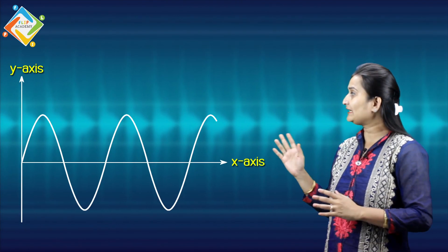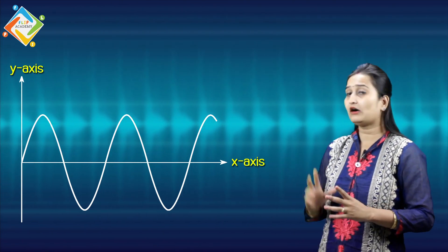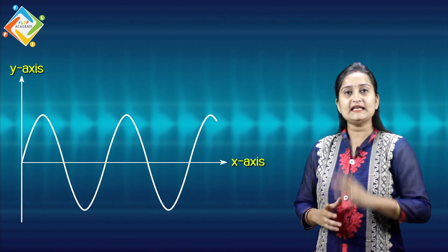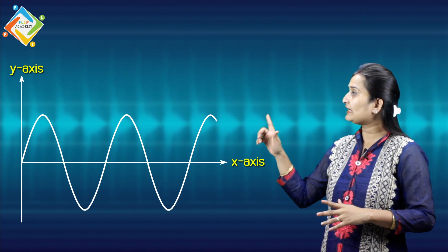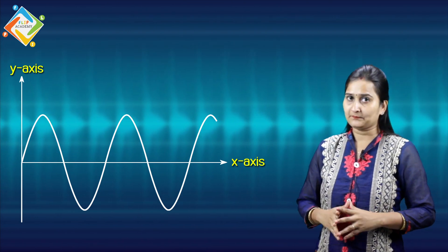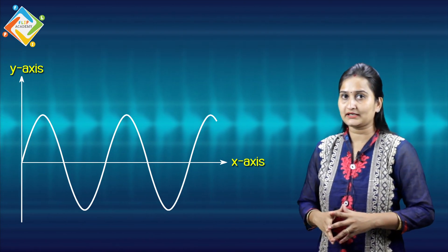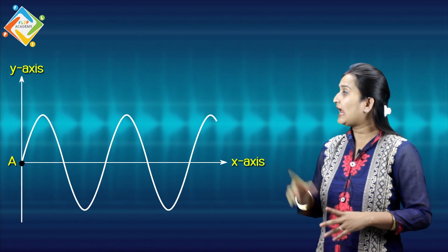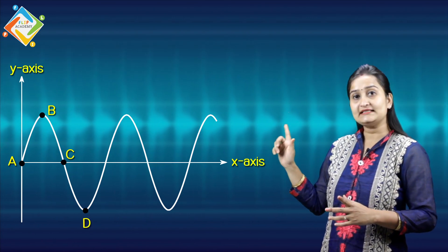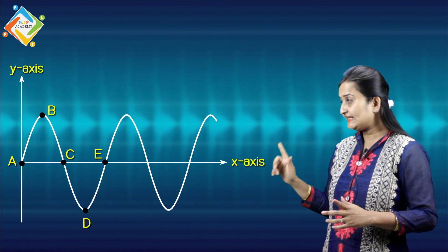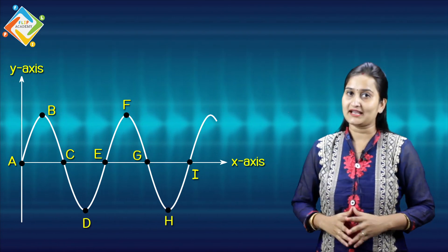You can see this in the diagram. In this diagram, this is a wave. This wave has many parts — we have some parts numbered: A, B, C, D, E, F, G till I.